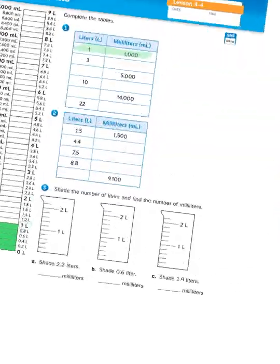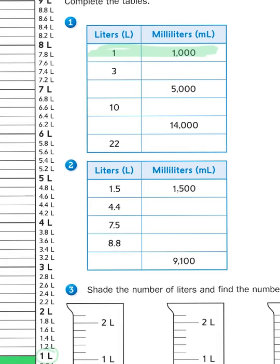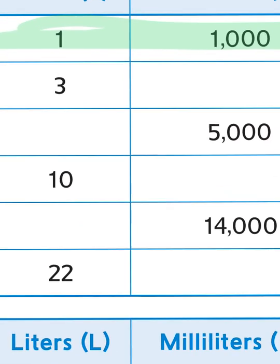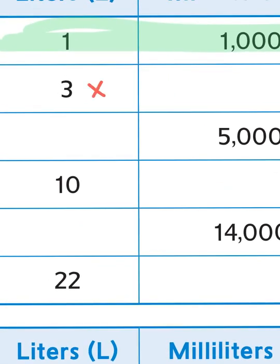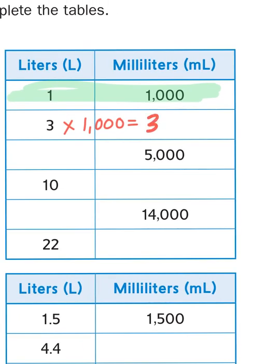So let's take a look at this table, inputs and outputs. If I know that there are 3 liters, I want to know how many milliliters that's equivalent to. We didn't get away from multiplication after all. All I have to do is multiply 3 times the number of milliliters in 1 liter, that's 1,000, to get my product, which is 3,000. There are 3,000 milliliters.